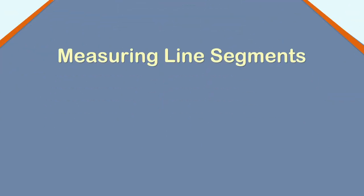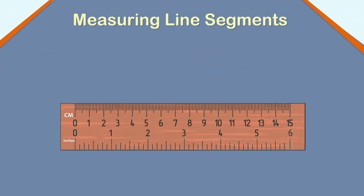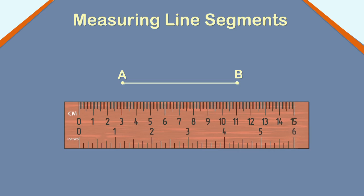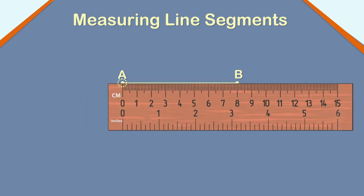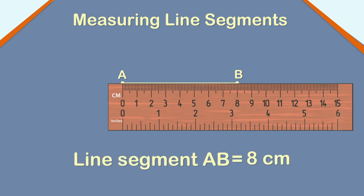We can measure line segments using a ruler. First, let us start with small lengths. Let us measure this line segment AB using a ruler. Here, we will use a centimeter scale as a ruler. Place the zero mark of the ruler along one end of the line segment. That is point A. The marking on the ruler at which the line ends, that is the marking at point B, gives us the measure of the line segment. Here, the line segment AB measures 8 centimeter.